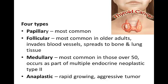Medullary is the most common in those over 50. It occurs as part of multiple endocrine neoplasia type 2 or a familial endocrine disorder. The tumor will secrete calcitonin, steroid hormone ACTH, prostaglandins, and serotonin. Anaplastic simply means cells that no longer resemble their cell of origin. An anaplastic thyroid cancer is a rapid-growing, aggressive tumor that invades nearby tissue, with manifestations that include stridor, hoarseness, and dysphagia as the trachea is invaded by the cancer cells.